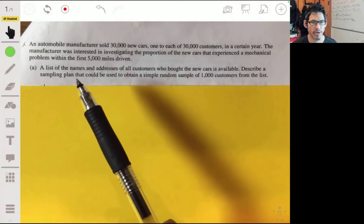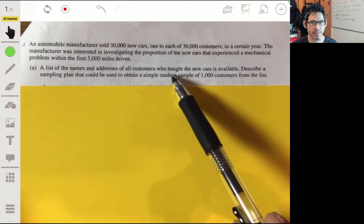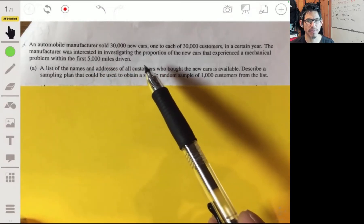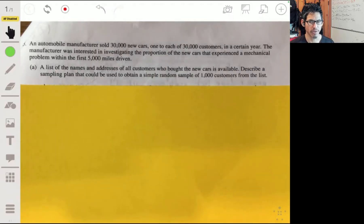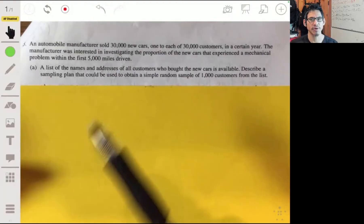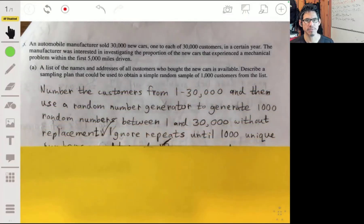In part a, we have to basically describe a sampling plan that can be used to obtain a simple random sample of a thousand customers from the list that gives you all the names and addresses of customers that bought the new car. Simple random sample essentially just means that you want to give each customer equal chance of being chosen. Assign each person a number. So number the customers from 1 to 30,000.